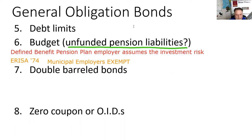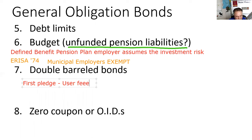A double-barrel bond has two promises — two pledges. Just like a double-barreled shotgun: if the first shot misses, the second gets you. The first pledge is a user fee, and the second pledge is the full faith and credit of the municipality.